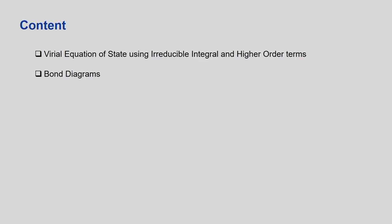Welcome back. In today's lecture we will see the virial equation of state with higher-order terms. In the previous lecture we saw terms with only beta_1, and we also saw an explanation for how beta_1 arises and what the irreducible integral is. What we will do in this lecture is study the virial equation of state using irreducible integrals of higher-order terms. We have seen beta_1; now we will go for beta_2, beta_3, and likewise.